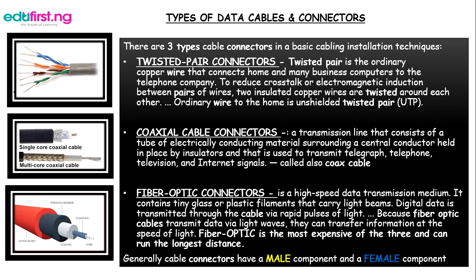Types of data cable connections — first, twisted pair connectors: the twisted pair is the ordinary copper wire that connects homes and many businesses to the telephone company. To reduce crosstalk or electromagnetic induction between pairs of wires, two insulated copper wires are twisted around each other so there will not be any interference. Ordinary wire to the home is unshielded, so the reason for the twist is to shield it from magnetic interference.